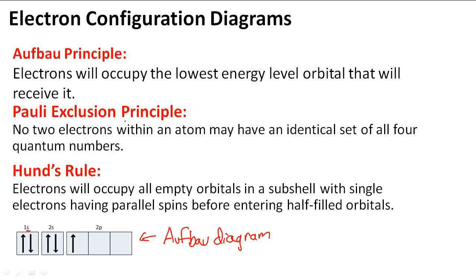Then Pauli exclusion principle says no two electrons within an atom may have an identical set of all four quantum numbers. So we cannot have these electrons spinning in the same direction because then they would have the same quantum number and violate the Pauli exclusion principle. This is why we draw the different spins, because they don't have the same quantum numbers.